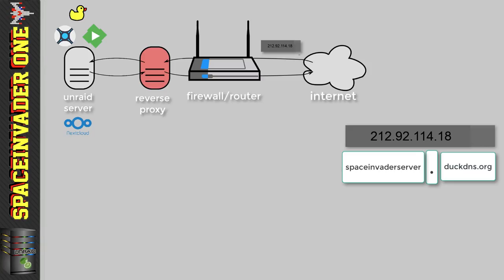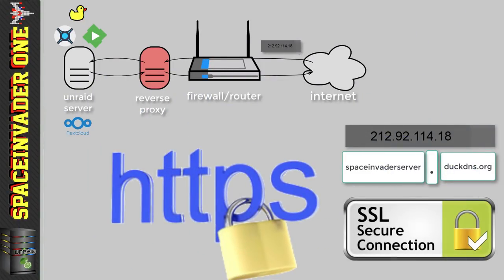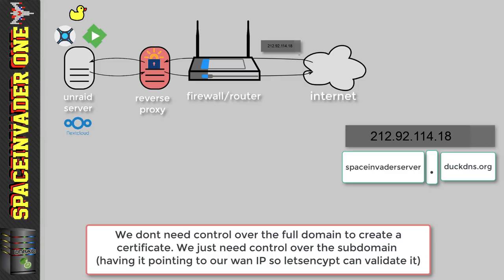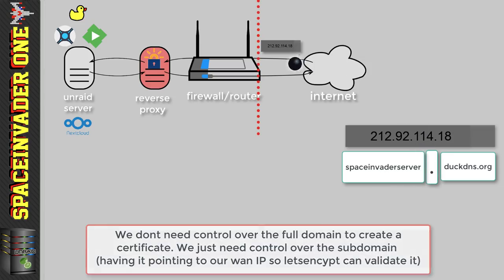The subdomain SpaceInvaderServer.DuckDNS points through to the WAN IP address, for example 212.92.114.18. Now we want to connect to our proxy using HTTPS, so we'll need a valid SSL certificate. Because we have a subdomain pointing to our server, we can use Let's Encrypt running inside the proxy to create a valid certificate for that subdomain. Let's Encrypt validates itself by going out to the internet and checking if it can connect back using that subdomain. If it can validate, it creates a certificate. It's really important that before creating certificates, you've forwarded the correct ports in your firewall/router so that validation can actually take place.